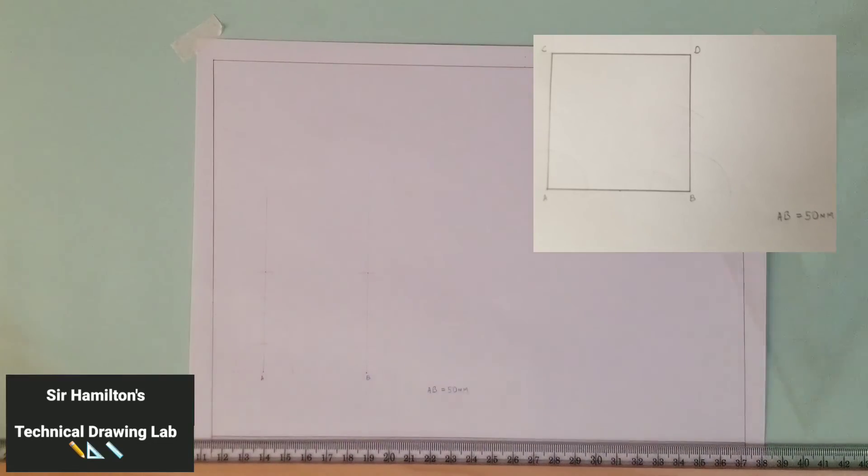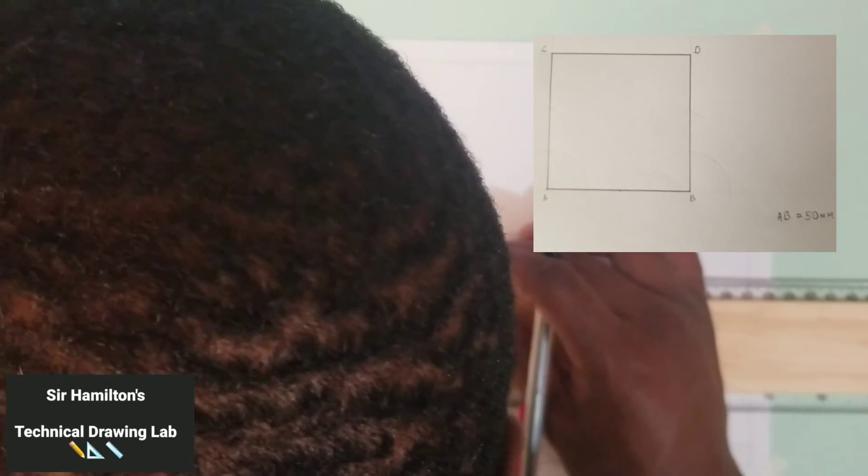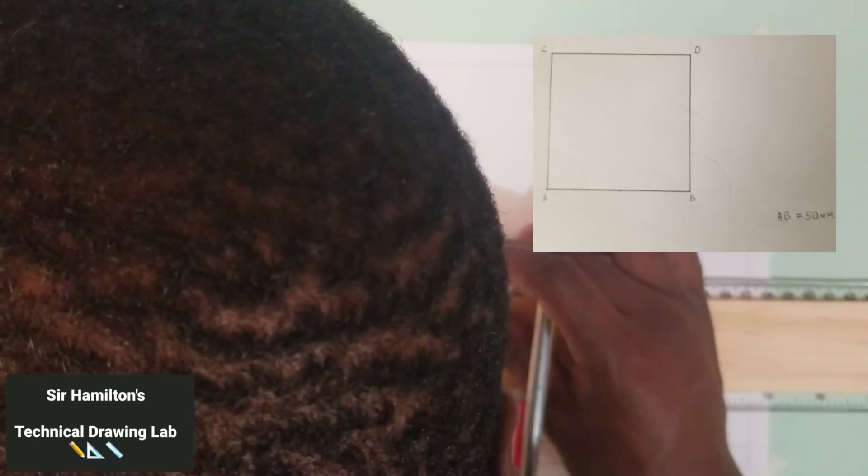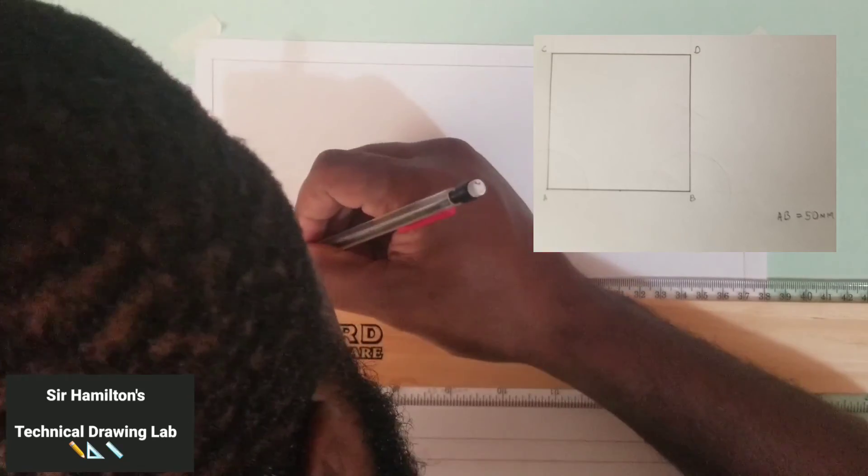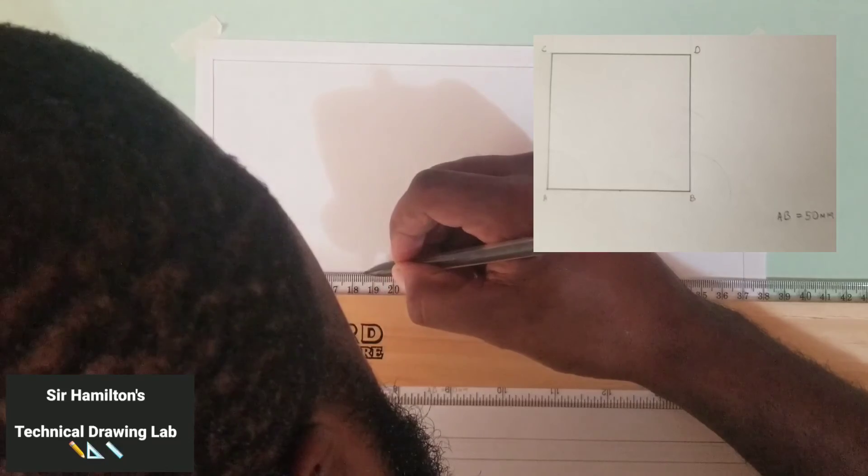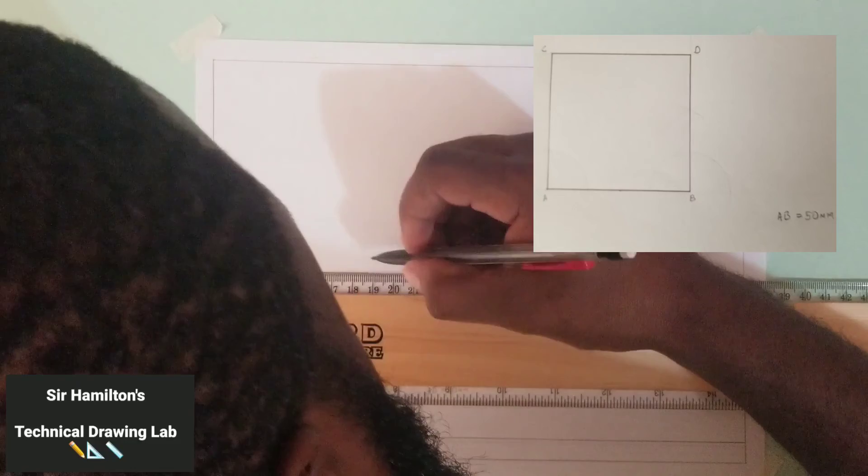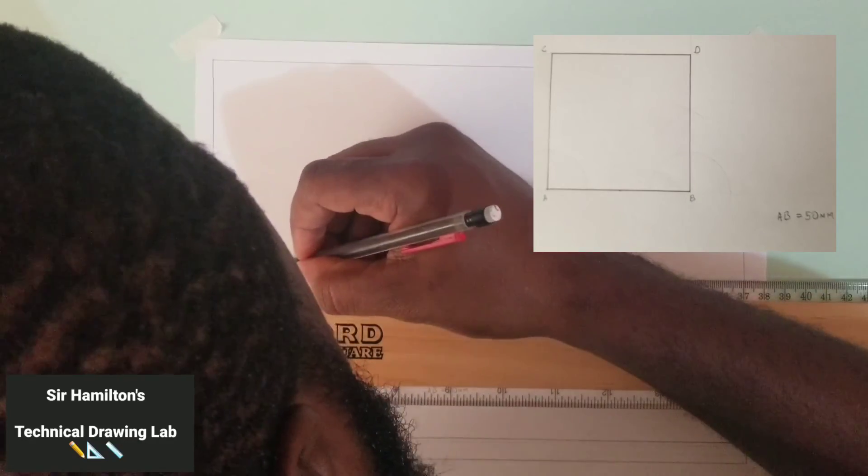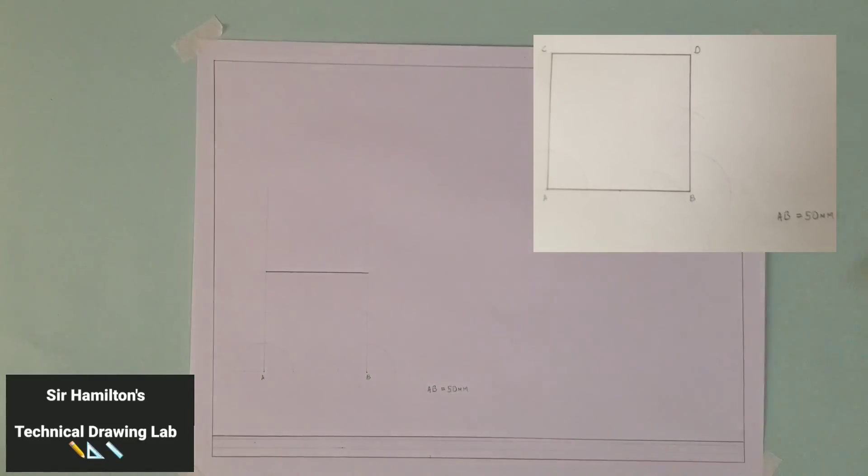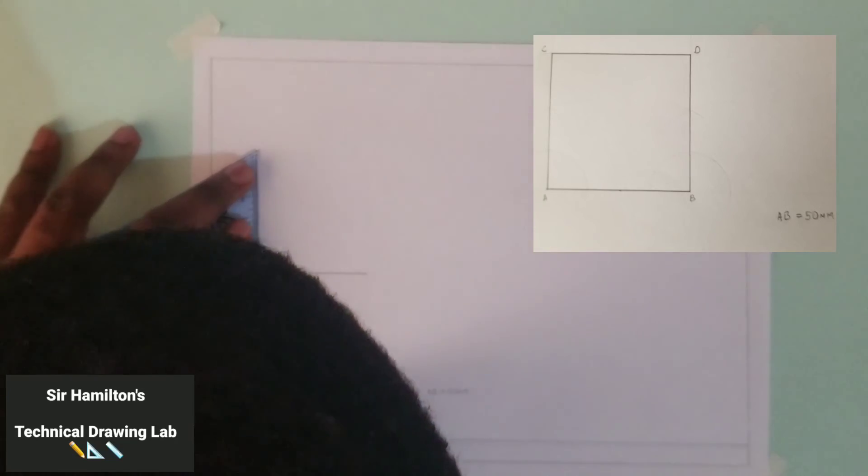Great, and then using either our set squares or T-square, either which one, we can now line up and draw our final line of our square. I'm just going to go right ahead and brighten this line. Also, I'm going to brighten this line.